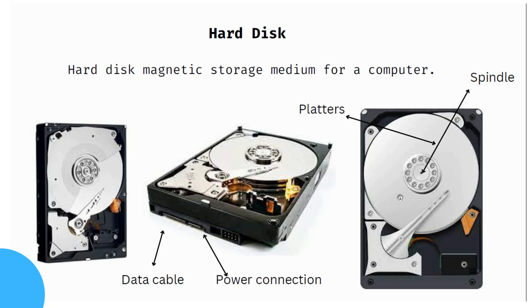When you save data on the hard disk, data is saved on platters stacked on top of each other. This is a magnetic storage medium. In the center, there is a spindle and a spindle motor that rotates at speed. The tip is the read-write head, which is used to read, write, and erase data. There are also power connections and a data cable.